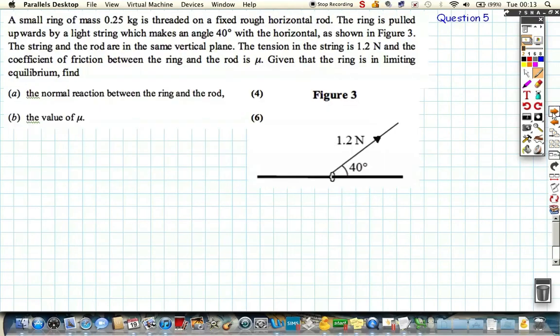So question 5. We've got a ring as pictured here threaded onto a rod and it says it's a rough horizontal rod. That tells us that friction is involved and if friction is involved we need to remember instantly the equation friction is equal to mu r, where mu is the coefficient of friction.